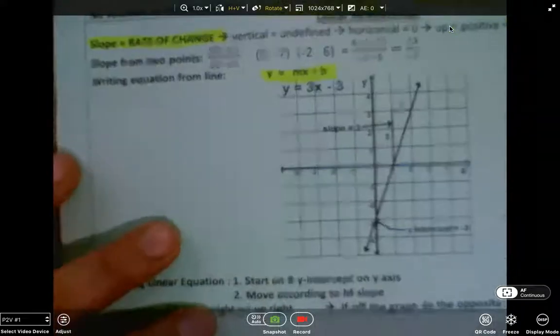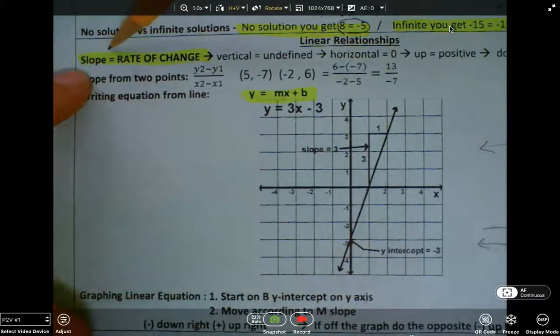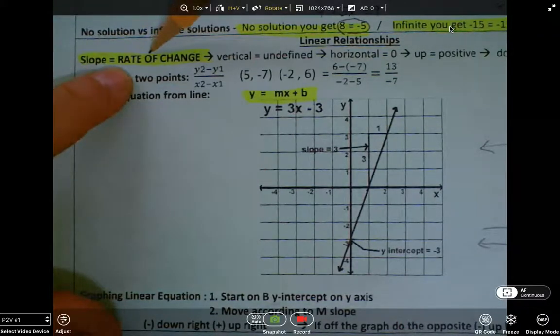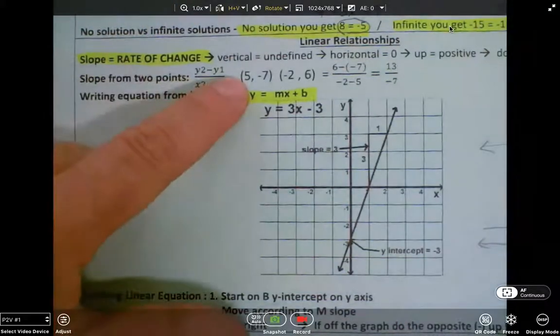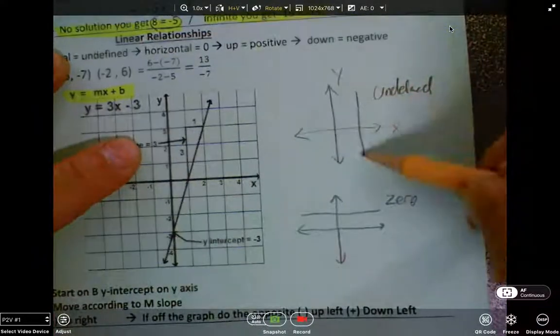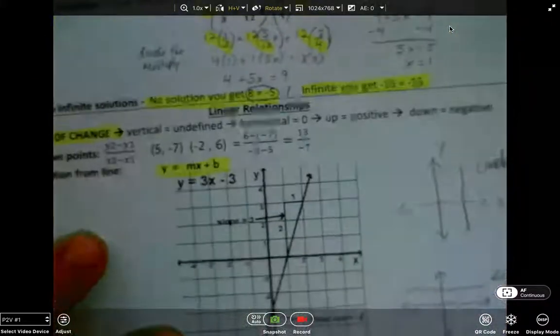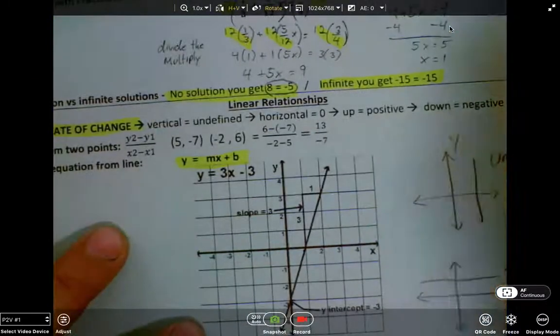We had a huge unit on linear relationships this year. We started with slope, and another word for slope, if you see it on MCAS, is rate of change. Slope Dude taught us that undefined slope was up and down vertical. Zero slope is horizontal. And then, obviously, positive and negative.